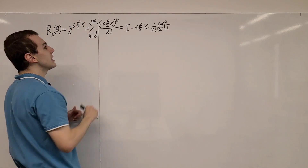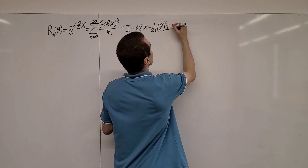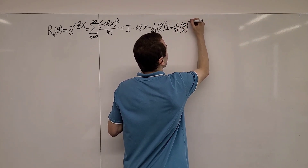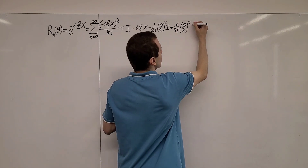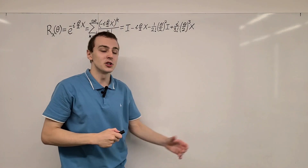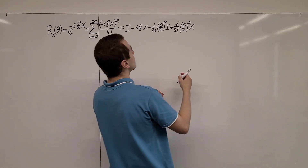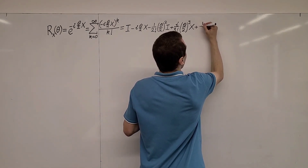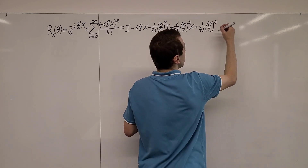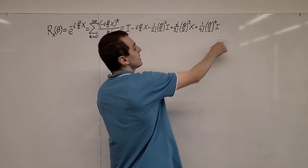Now let's look at the k equals 3 term. We raise this to the power of 3: minus i cubed gives us plus i, so we'll have plus i on 3 factorial, then (theta on 2) to the power of 3, and an odd power of Pauli X gives us X — because X cubed is X squared times X, and X squared is the identity, leaving just X. For k equals 4, that gives us plus 1 on 4 factorial, (theta on 2) to the power of 4, and an even power gives the identity — X squared times X squared is the identity squared, which is the identity.